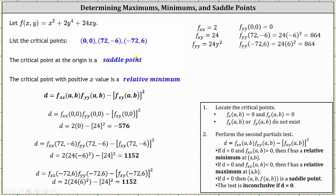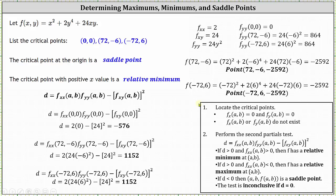To find the relative minimum values, we evaluate the original function at the critical points. In both cases, the function values are negative 2,592. So the relative minimum values are negative 2,592, occurring at the critical points (72, -6) and (-72, 6). Sometimes you'll be asked to give the entire point representing a relative min or max, which would be (72, -6, -2592) and (-72, 6, -2592). I hope you found this helpful.